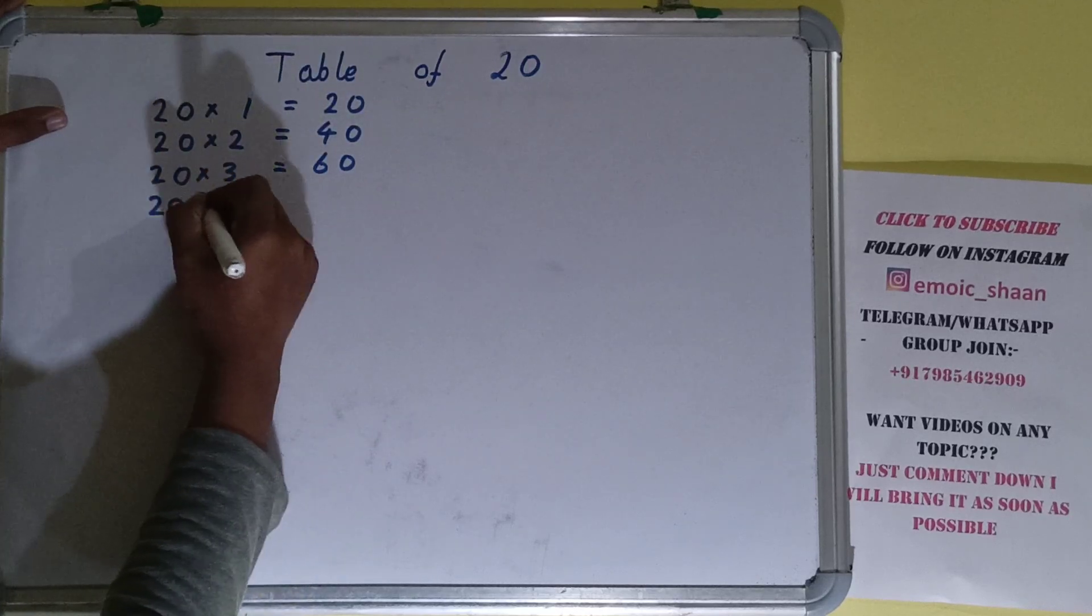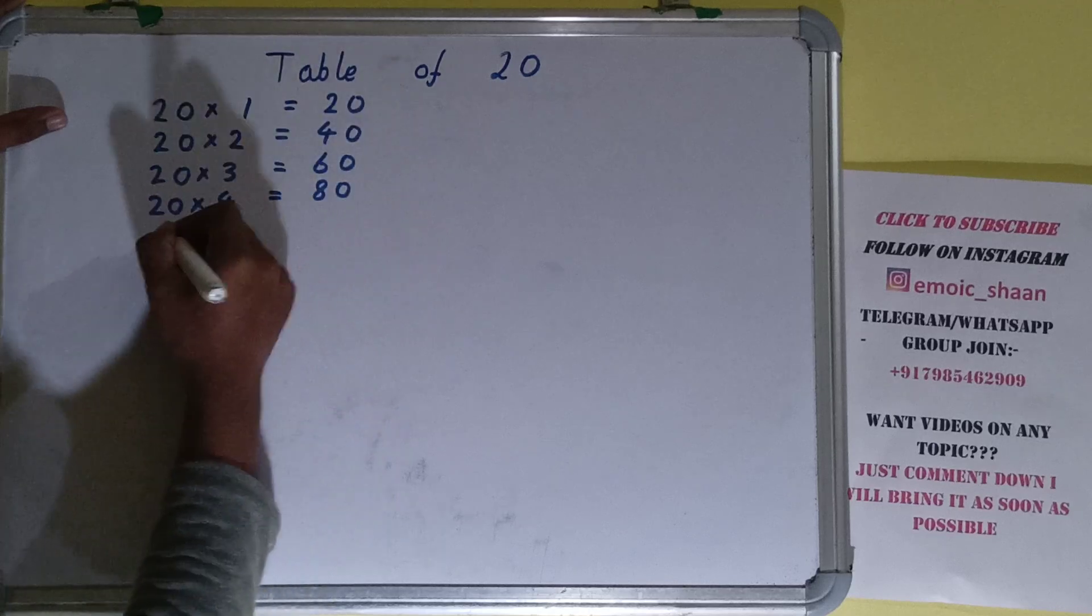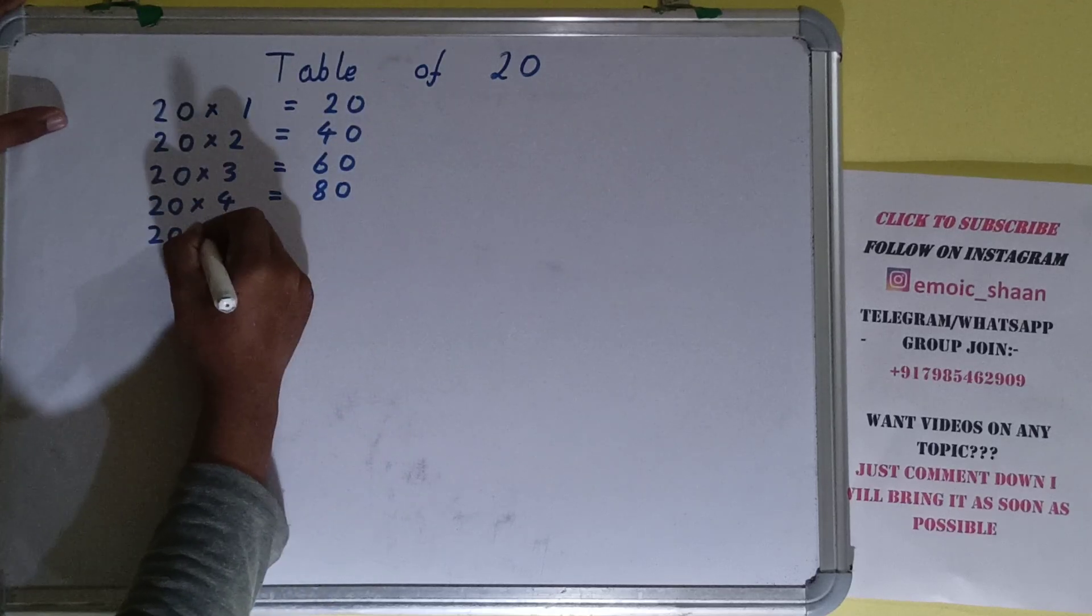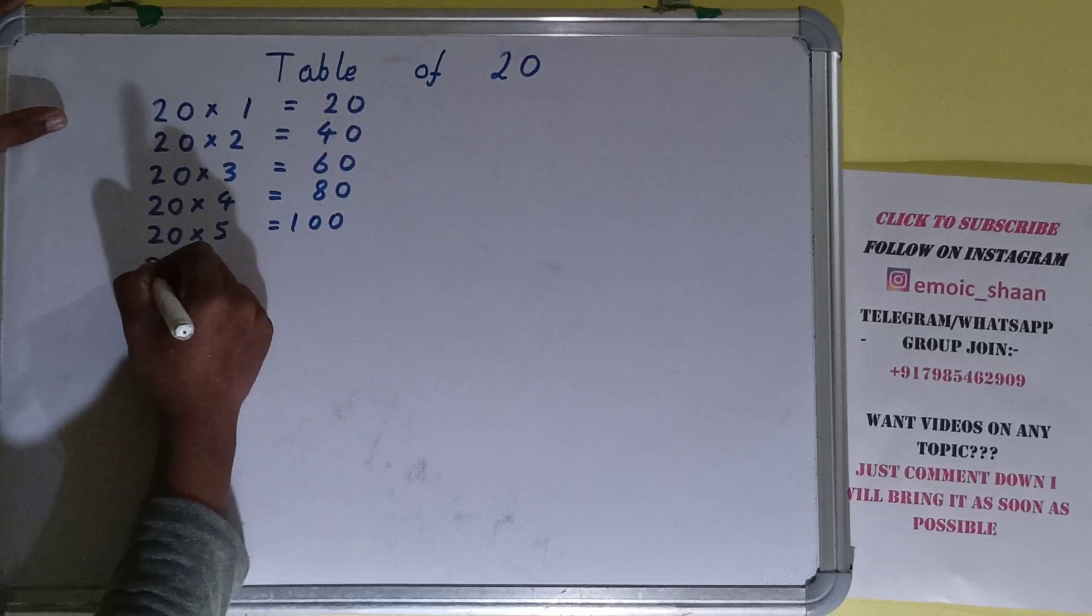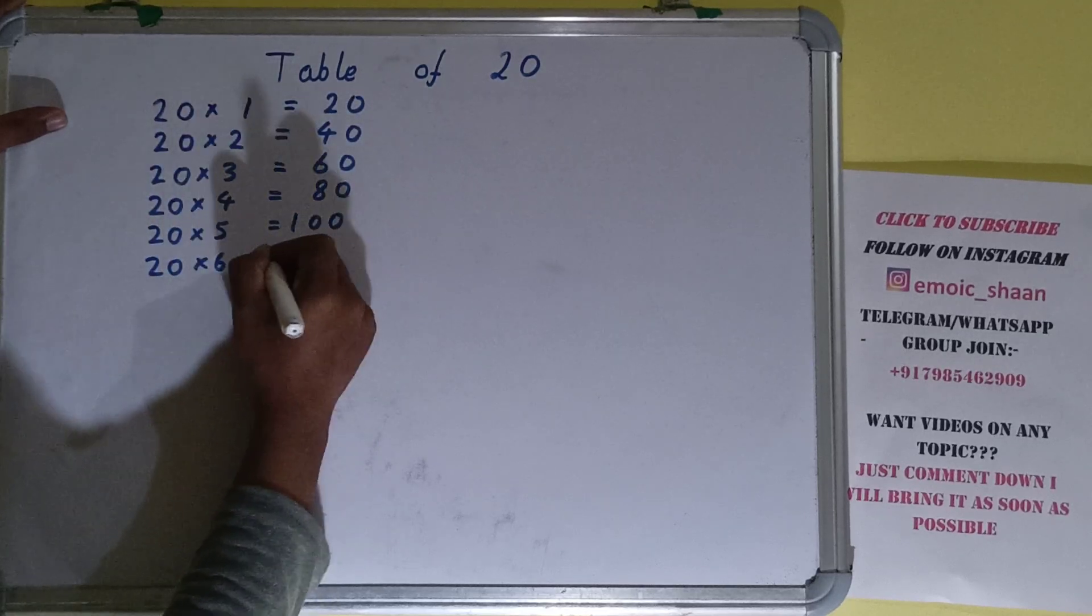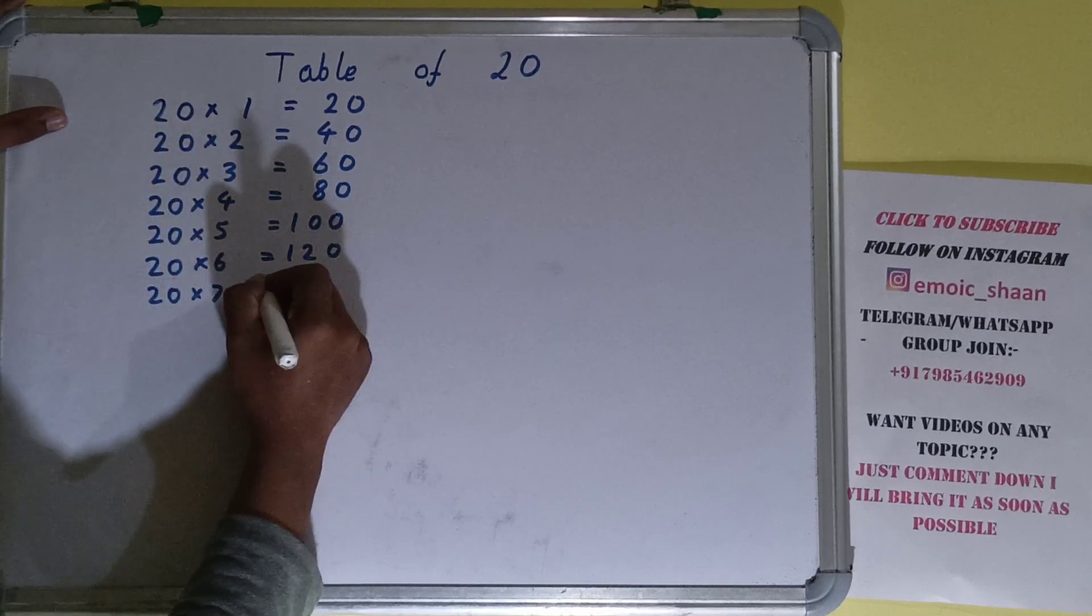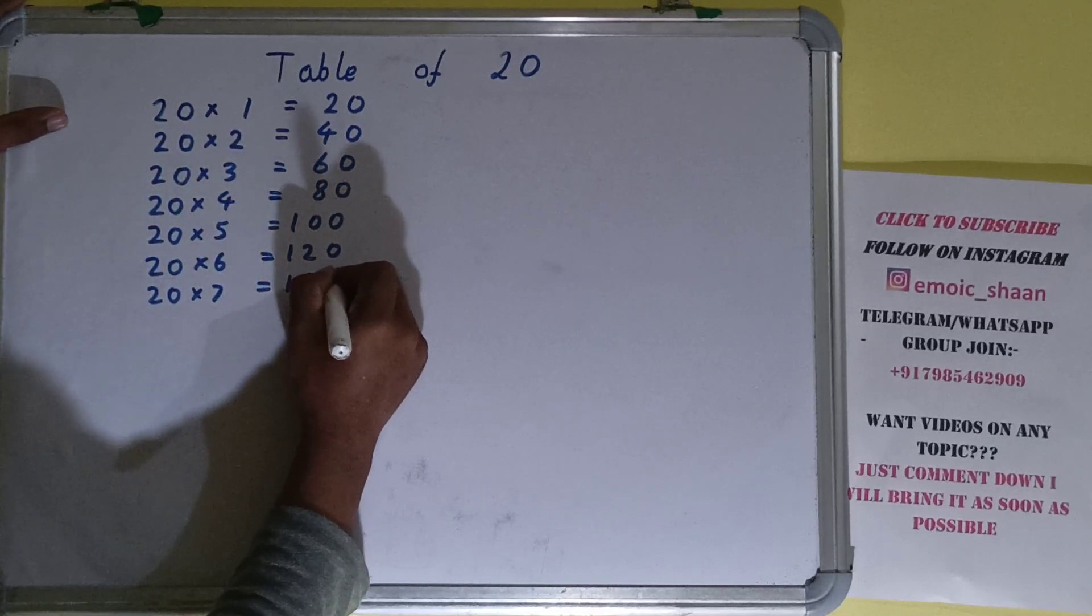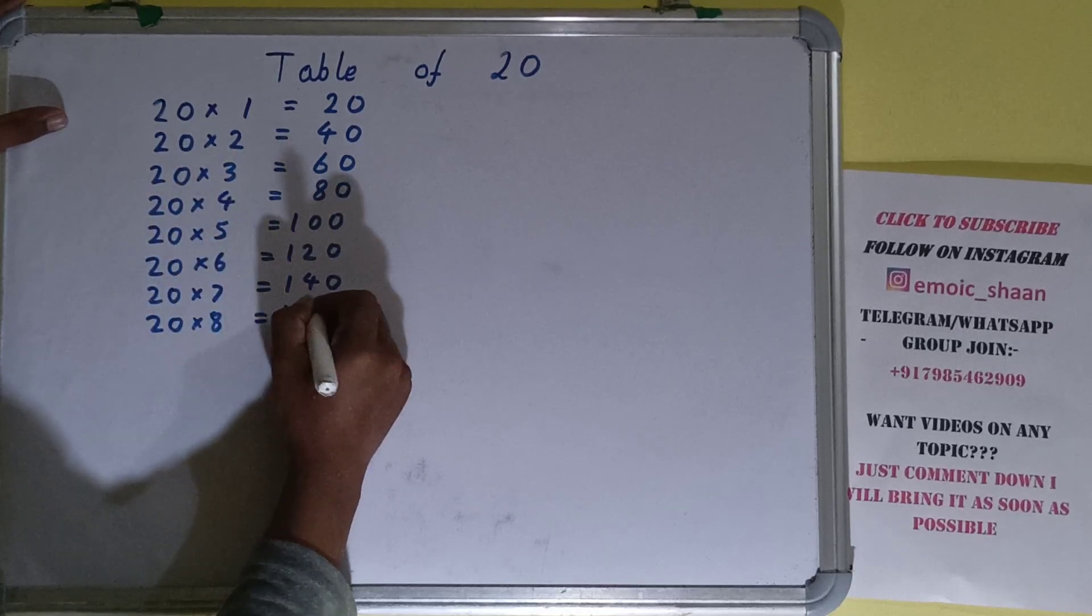20 into 4 is 80. 20 into 5 is 100. 20 into 6 is 120. 20 into 7 is 140. 20 into 8 is 160.